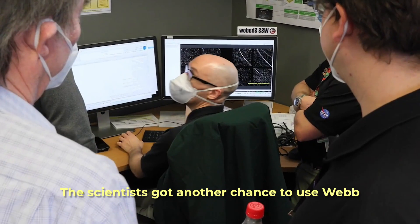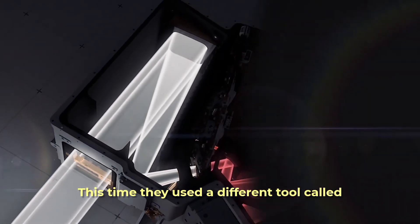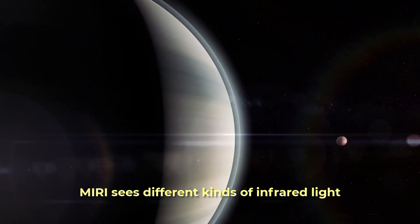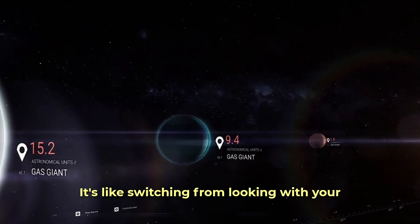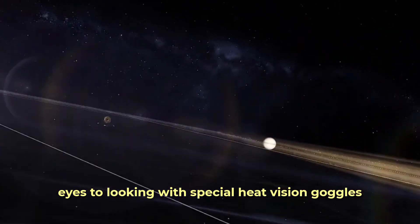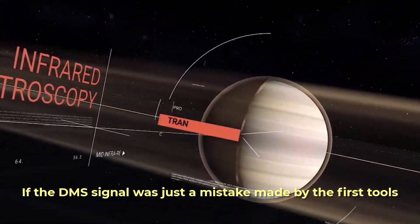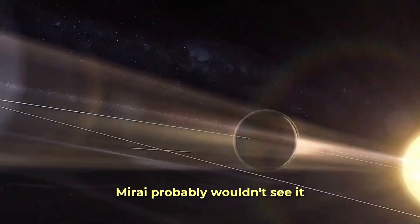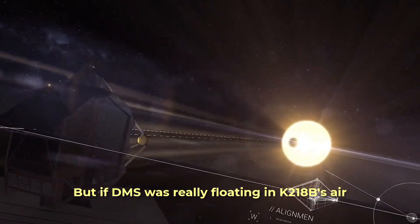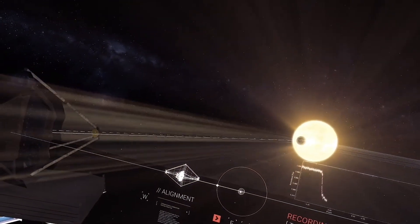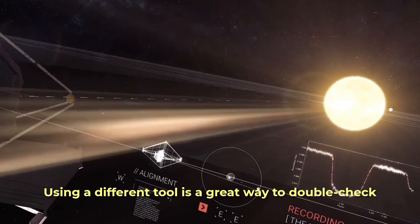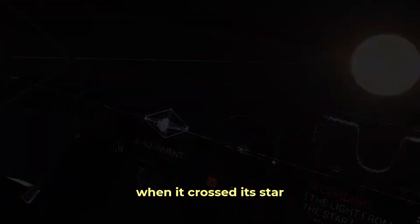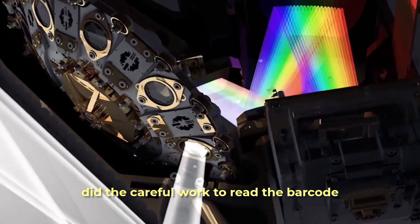The scientists got another chance to use Webb. This time, they used a different tool called MIRI, mid-infrared instrument. MIRI sees different kinds of infrared light than the first tools Webb used. It's like switching from looking with your eyes to looking with special heat vision goggles. If the DMS signal was just a mistake made by the first tools, MIRI probably wouldn't see it. But if DMS was really floating in K2-18b's air, MIRI should be able to spot its barcode too, maybe even better. Using a different tool is a great way to double check. So they pointed MIRI at K2-18b when it crossed its star. They collected the light, did the careful work to read the barcode, and the signal was there again.